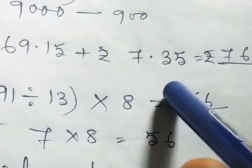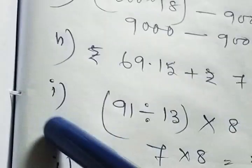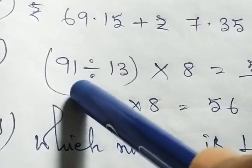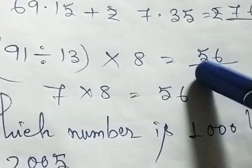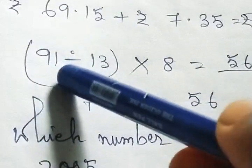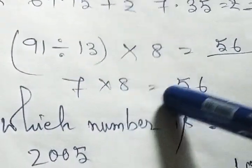Simple addition, answer will be 76.50 paisa. I, 91 divided by 13 multiply by 8 equal to what? So 91 divided by 13 equal to 7. Same way, 7 multiply by 8 equal to 56.